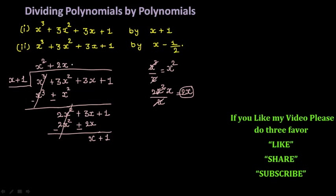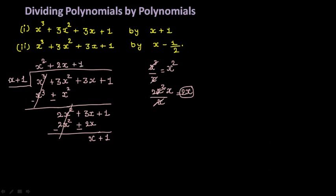Now you just need x, so multiply with 1. 1 into x gives you x and 1 ones are 1. Now again change the sign: x minus x is 0 and 1 minus 1 is also 0. So your remainder is 0 and your quotient is x square plus 2x plus 1. This is how we do simple division of polynomials.